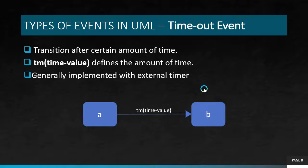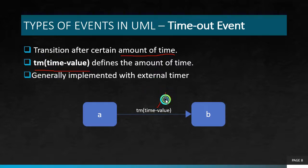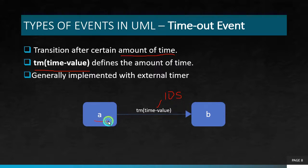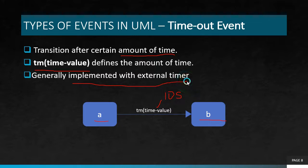Another one is the timeout event. A timeout event is based on an amount of time. We define it as tm(time value), where the time value can be any value such as 10 seconds or 5 seconds. After exceeding this particular amount of time, we go from one state to another state. This is implemented with external timers, and it is called the timeout event.